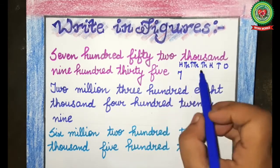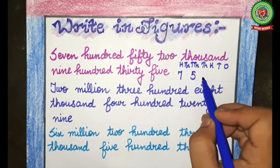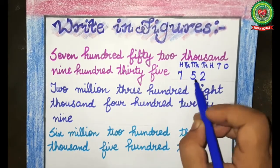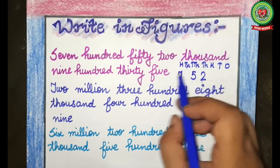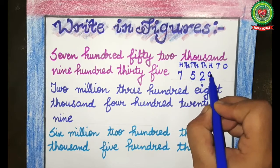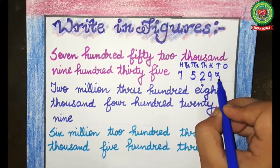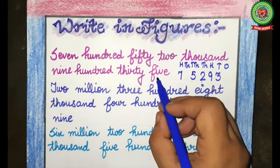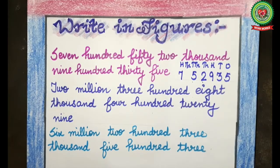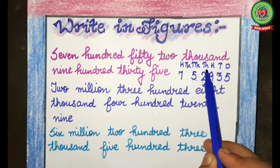52 — so 5 will come under ten thousands and 2 will come under thousands. 752 thousand. 900 — so 9 will come under hundreds. 35 — 3 under tens and 5 under ones. The answer is 752,935.